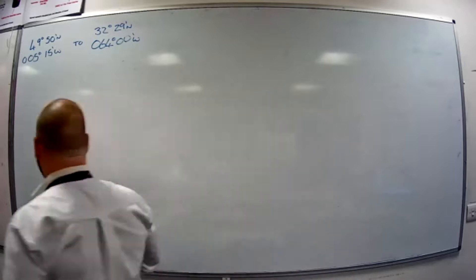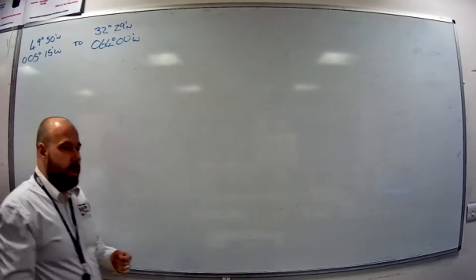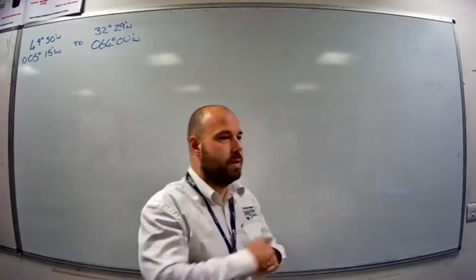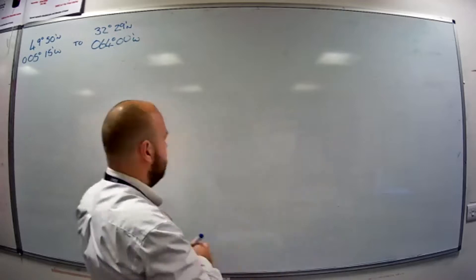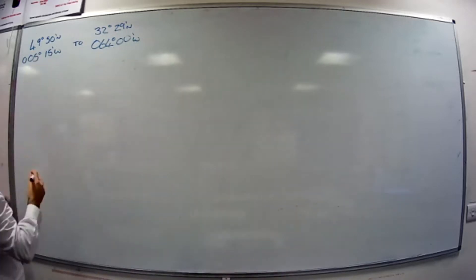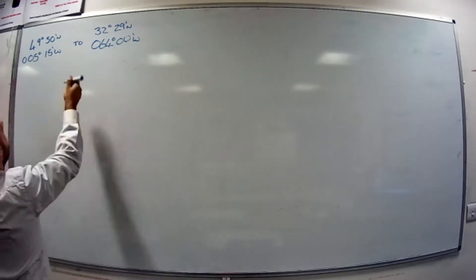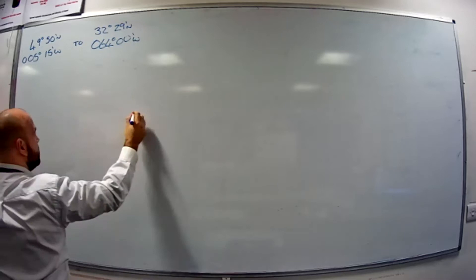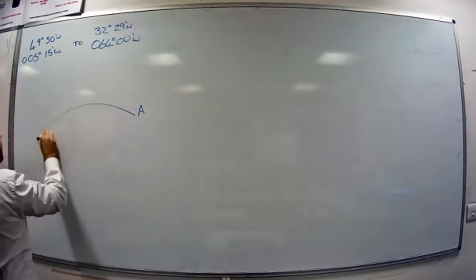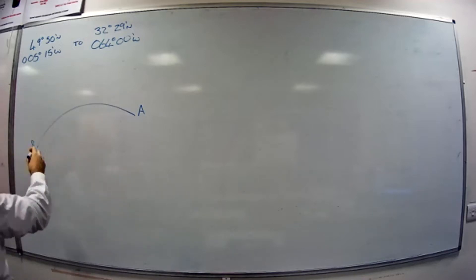What we're going to look at now is great circle distances. A great circle distance is the shortest distance between two points on the surface of the globe, and it forms a curve across the earth. So if we were going from 49°50'N 5°15'W to 32°29'N 64°W, we're going a little less north and a little more west. Position A is up there, and we do a great circle down to position B, which is more west and less north than position A.